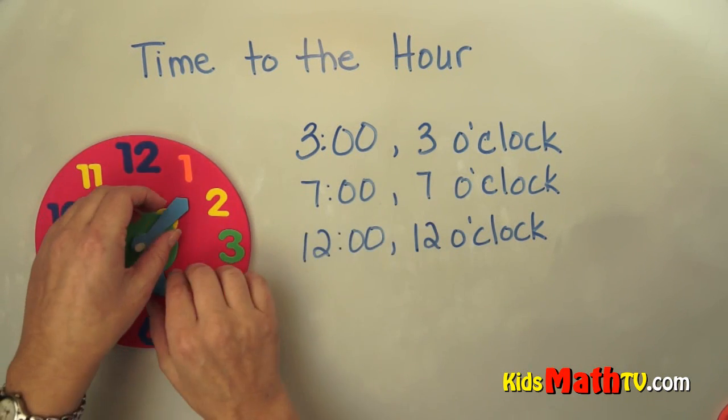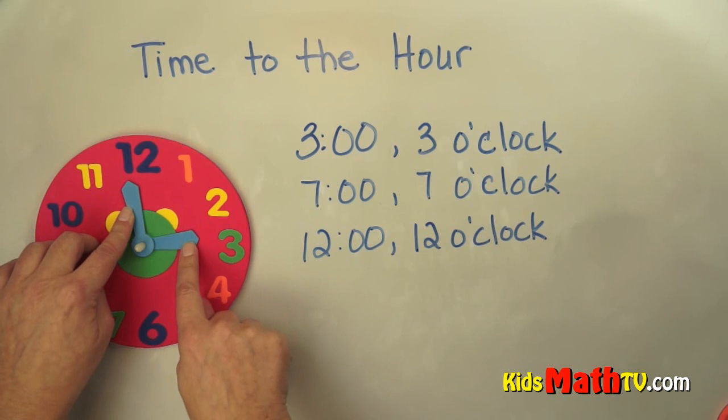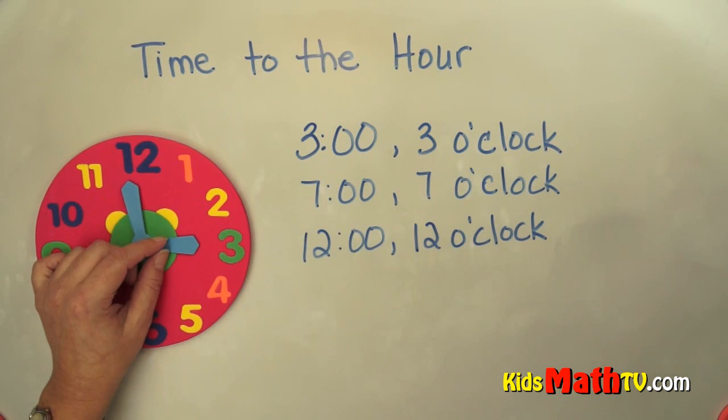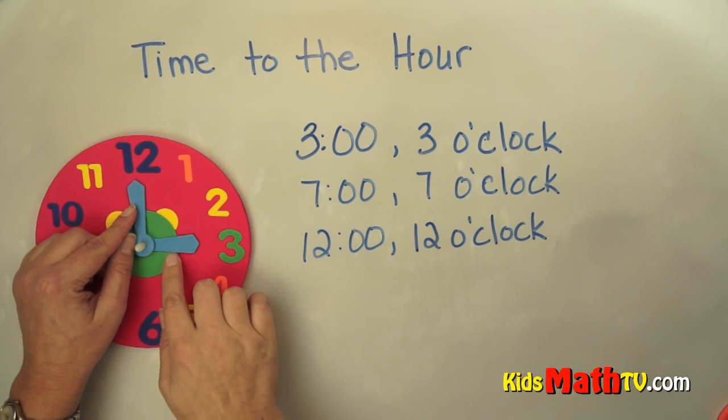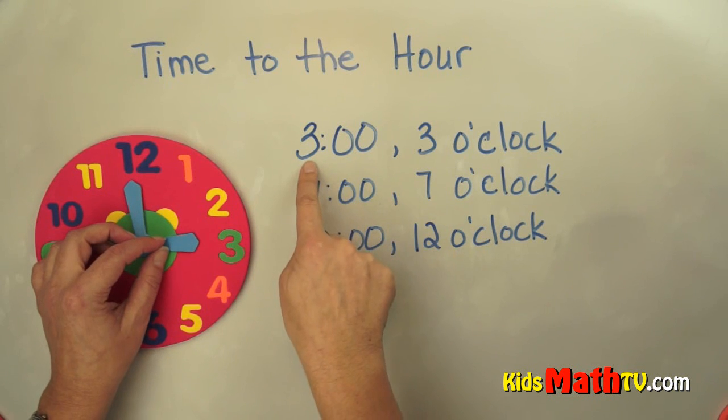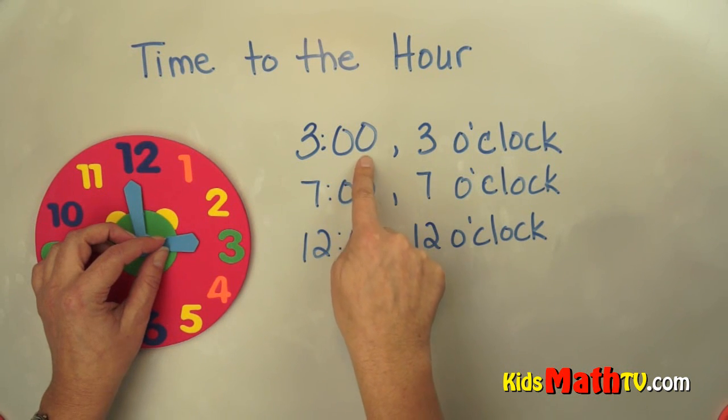So to show 3 o'clock, we call these the big hand and the little hand. The little hand tells the hour and the big hand tells the minutes. So 3 is the hour and 00 is the minutes.